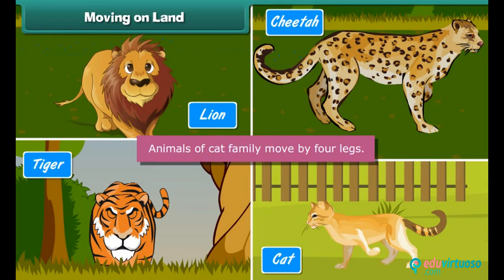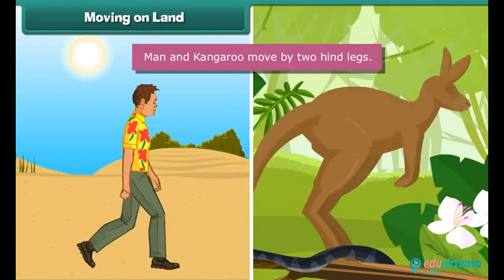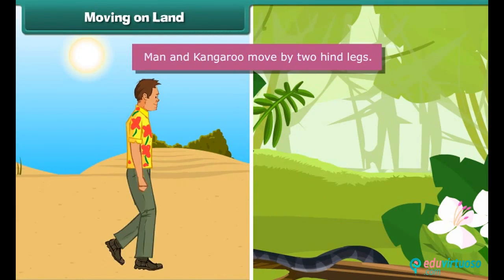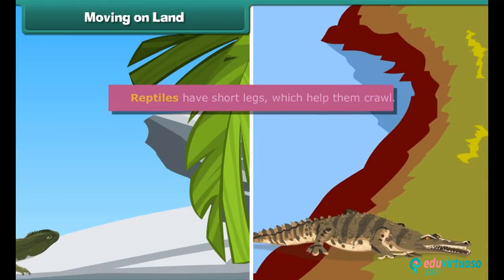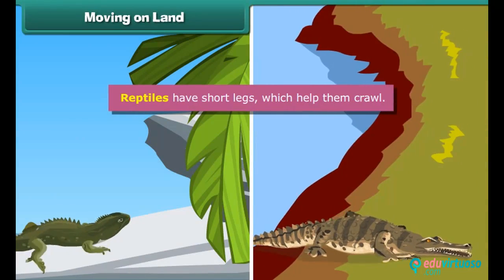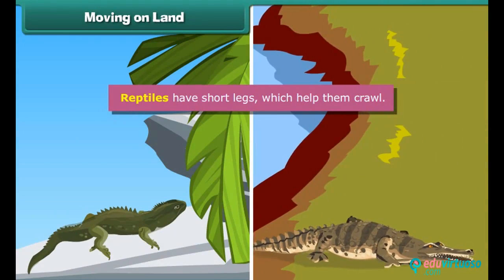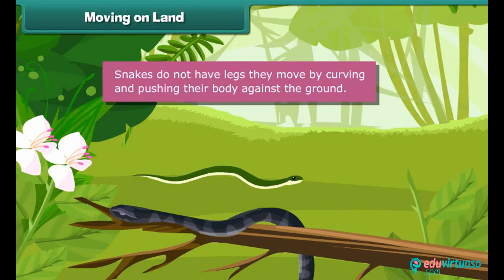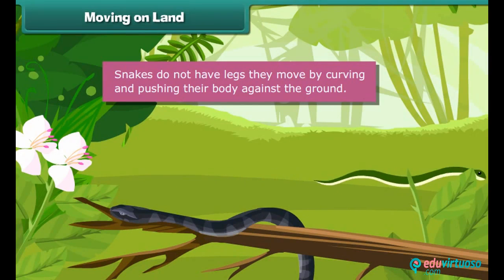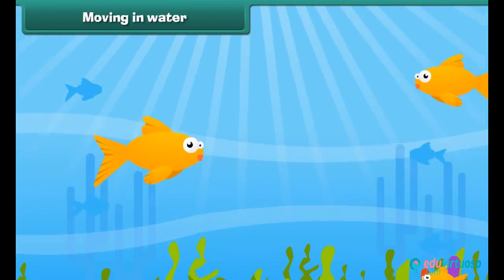Animals of the cat family move by four legs. Man and kangaroo move by two hind legs. Reptiles have short legs which help them crawl. Snakes do not have legs; they move by curving and pushing their body against the ground.